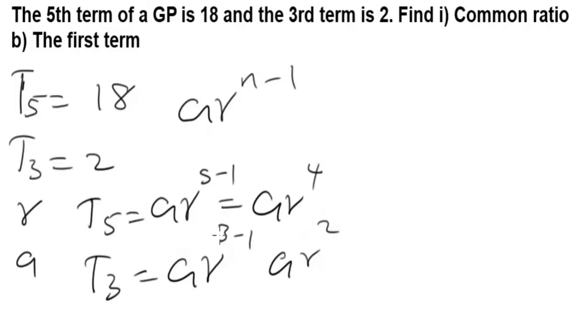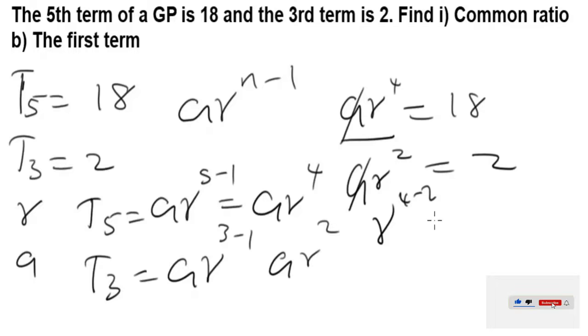The shortcut trick now you apply will be to get the common ratio would be to divide the higher term with the lower term. So it's going to be ar^4 equals 18 divided by ar^2 equals 2. This a will cancel with this a, so using the law of indices, the powers subtract: r^(4-2).